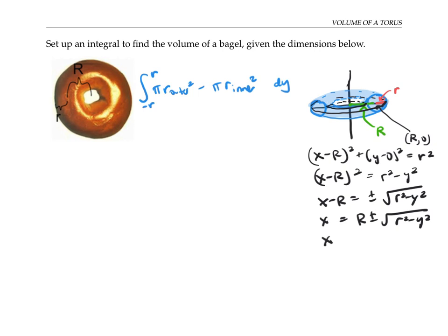Now there are two possible solutions: R + √(r² - y²) and R - √(r² - y²). These correspond to the x value on the outer part of this curve and the x value on the inner part of this curve, which will be the inner radius.